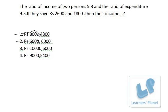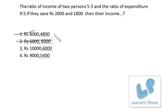Even if you have a 'none of these' option, don't worry — the entire calculation is matched here. For the other options, if you deduct 2600 and 1800 from those values, you won't get a multiple of 9. For example, 10000 minus 2600 is not a multiple of 9, and the expenditure must be a multiple of 9. No cross-verification or paperwork is required — 8000 and 4800 is the correct choice.